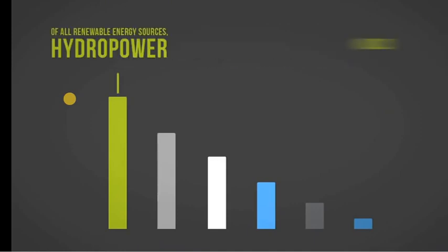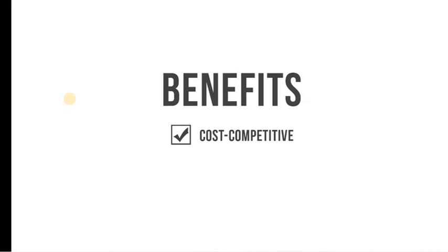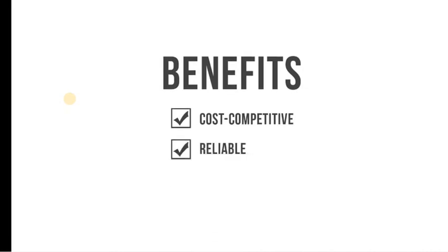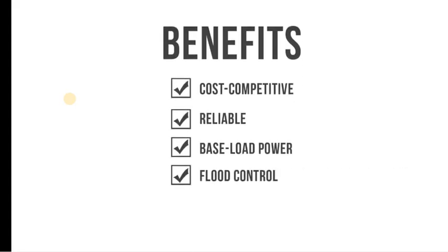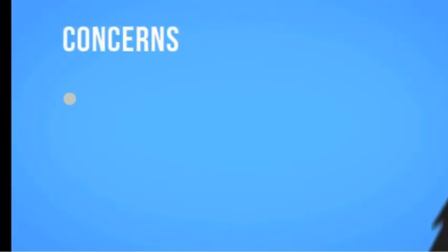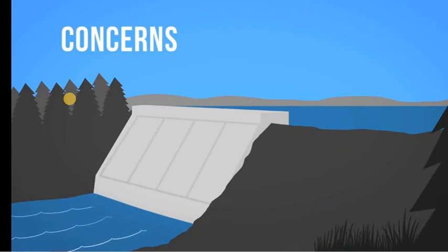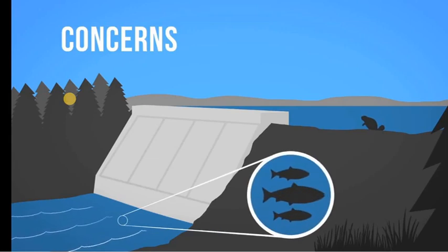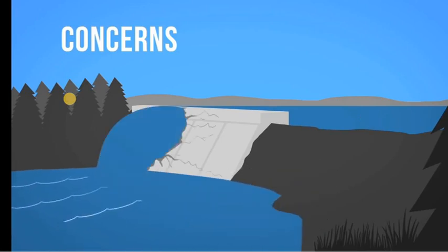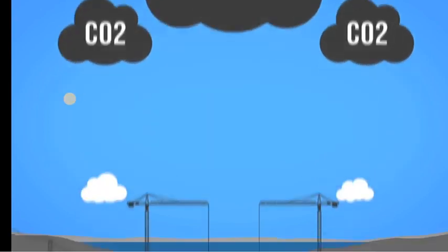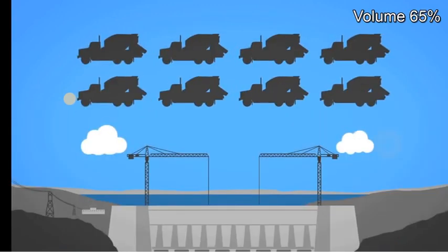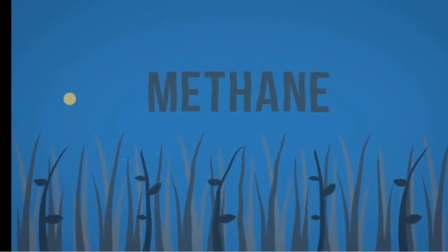Of all renewable energy sources, hydropower holds the largest share of worldwide electricity production. Hydropower has several benefits: it is a cost-competitive form of electricity even though initial building costs can be high, it is quite reliable compared to other renewable options, and in some cases dammed reservoirs can also help with flood control and provide a reliable water supply for communities. However, there are concerns, especially with large dams — damming a river has a major impact on the local environment, changing wildlife habitats, blocking fish passage, and often forcing riverside communities to relocate. Dam failures can be catastrophic. Hydro plants are also not completely free of greenhouse gas emissions: carbon dioxide is emitted during construction, and plant matter in flooded areas produces methane as it decays underwater.